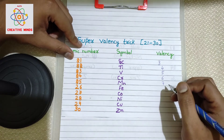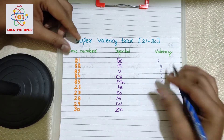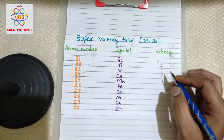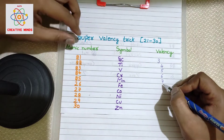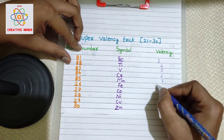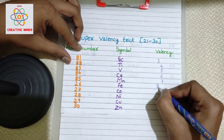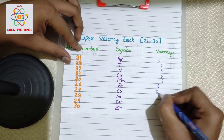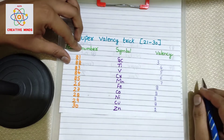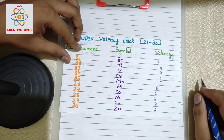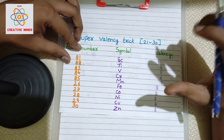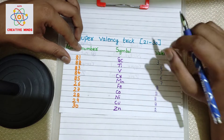Stop at seven. Now, after seven, the remaining elements' valences will be two, two, two, two, and two.